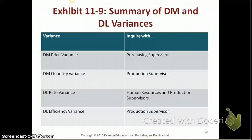Who is responsible for the direct labor rate variance? It could be one of two people: the human resources manager or the production supervisor. HR is responsible for hiring people, so if they hired at a higher or lower rate, they'd be responsible. However, if the production department went overtime and had to pay laborers time-and-a-half or double their salary, then the production supervisor would be responsible for the direct labor rate variance. Finally, the production supervisor is also responsible for the direct labor efficiency variance, since efficiency is determined by how well individuals perform their jobs during production.